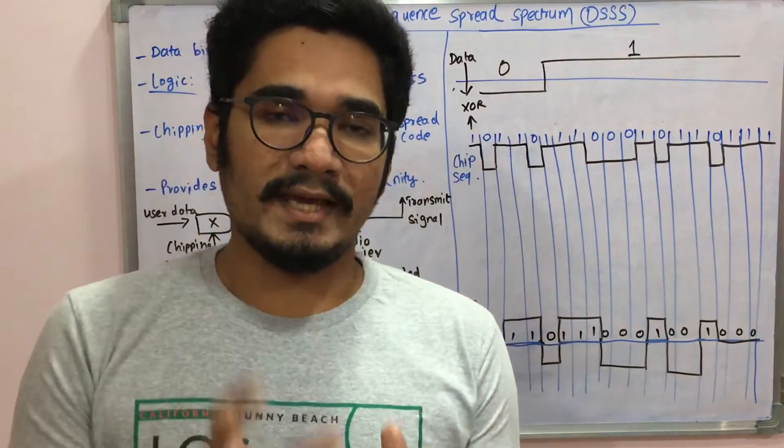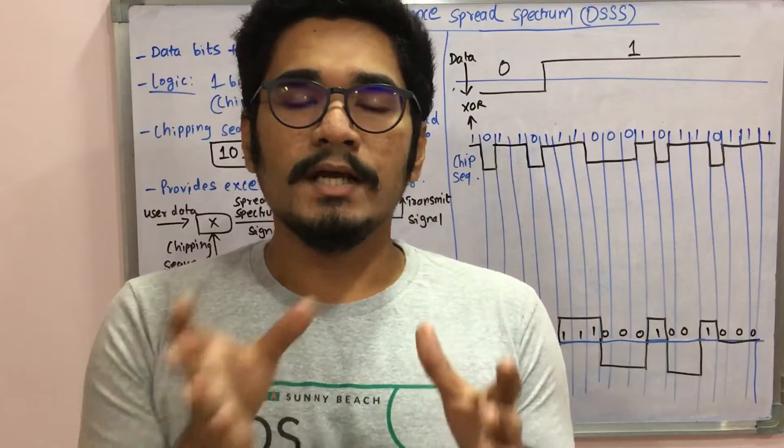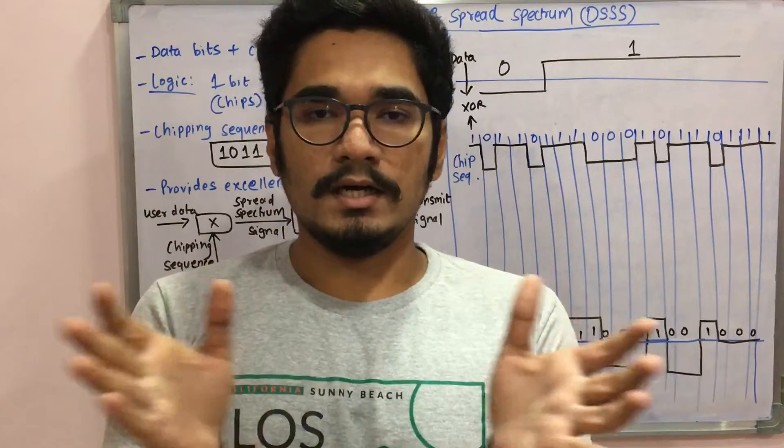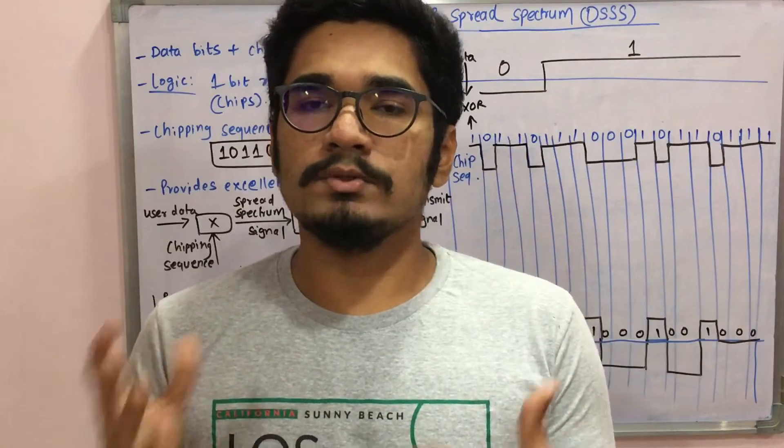For example, let's take a chipping sequence as X, and that X gets multiplied with each of the data bits. The end signal will have a bandwidth which becomes a multiple of X. That is the basic technique of DSSS.